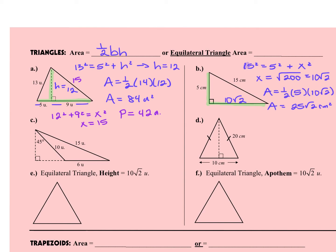For the perimeter, we just add all the sides up. What's important to recognize is that 10 radical 2 is not a like term with the other two sides. So the perimeter is 20 — the 15 and the 5 — plus 10 radical 2, and those just have to be left like that; they cannot be combined.